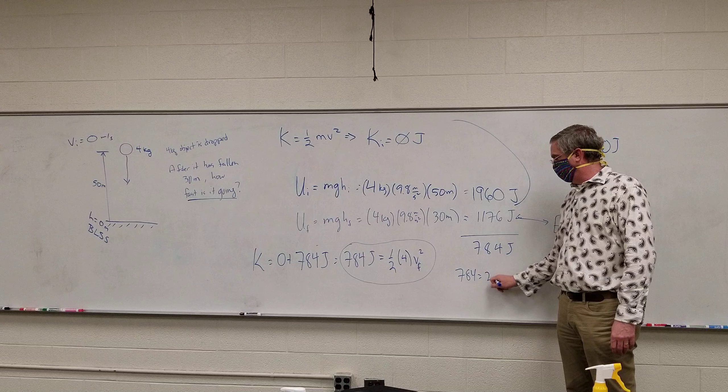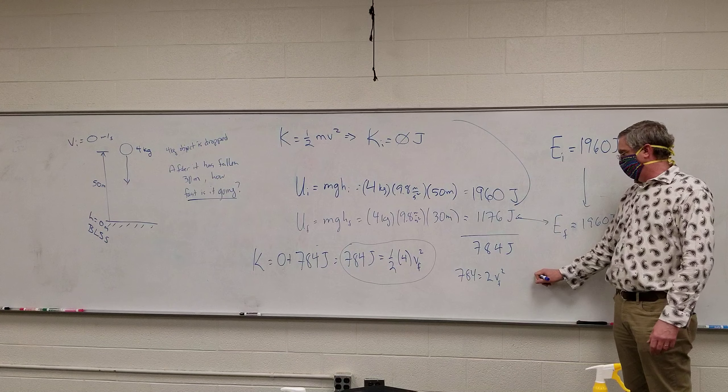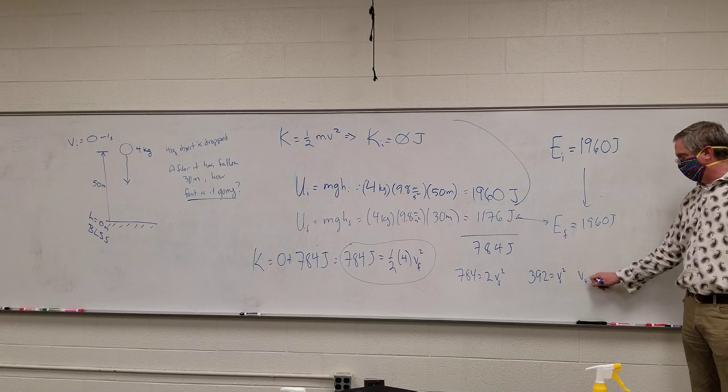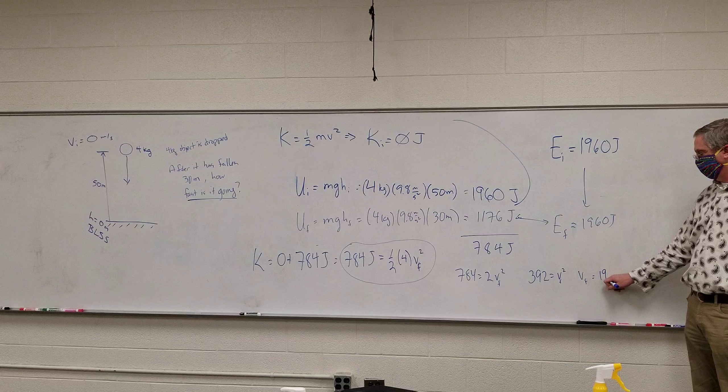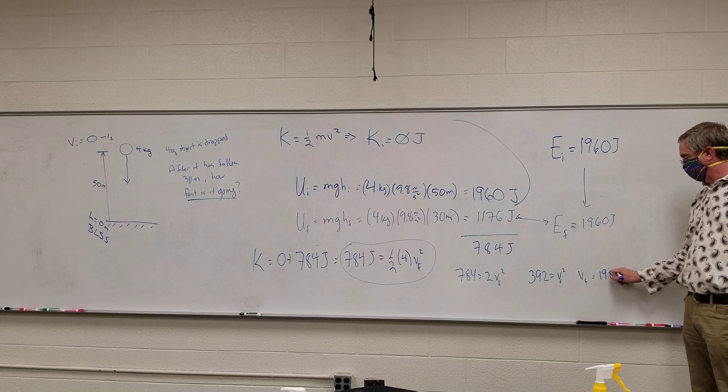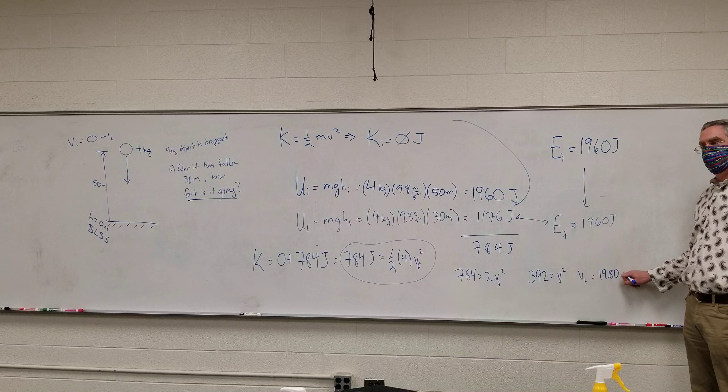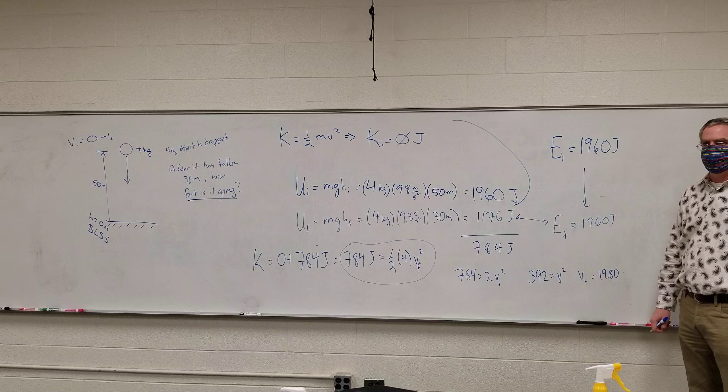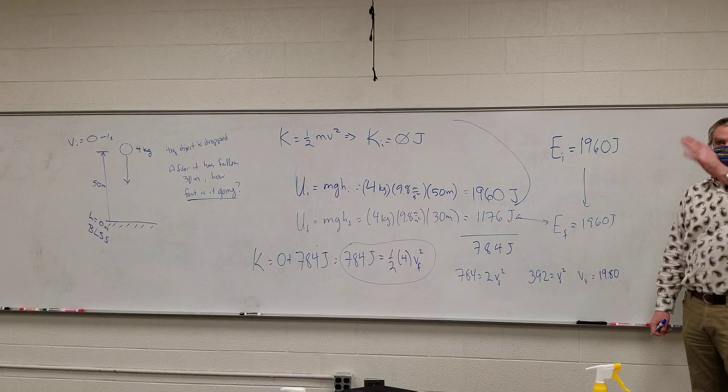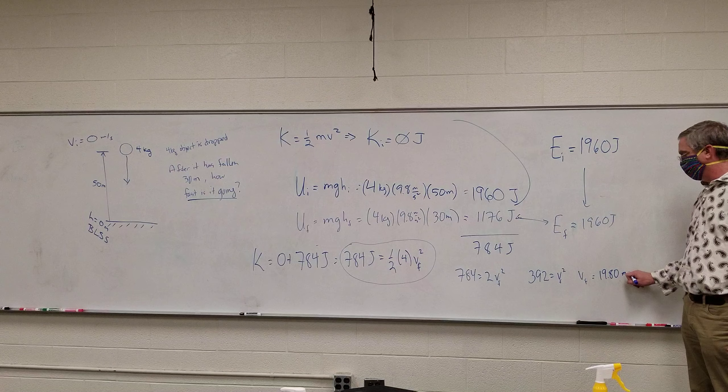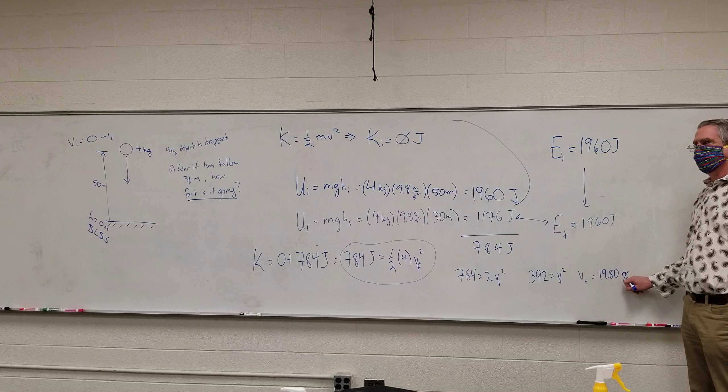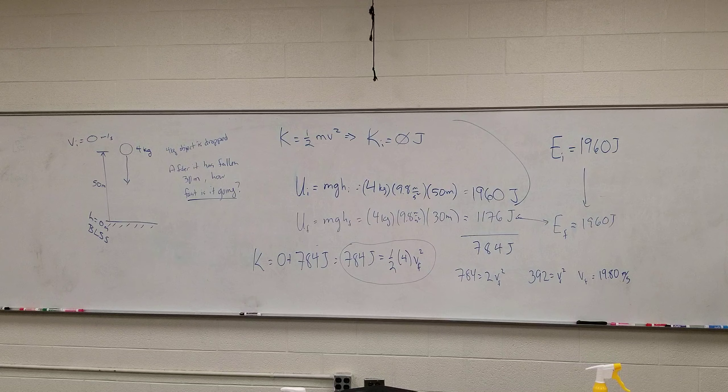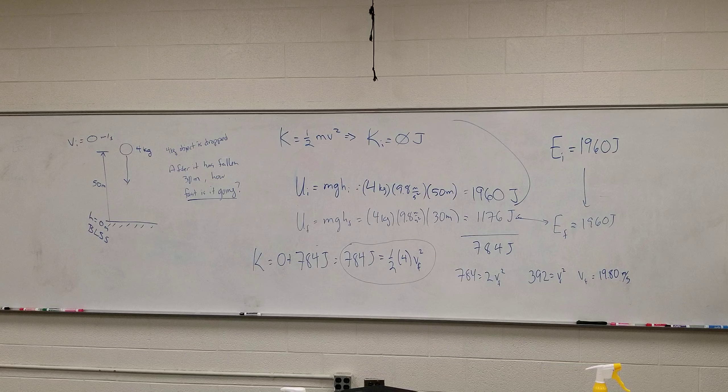So now we're down to this problem right here. 784 is equal to 2V squared. That's the final square. 392 is equal to V squared. 19 point something 8-0 close farther. I heard you say M-S there's something in between the M and the S. So it's going almost 20 meters a second.